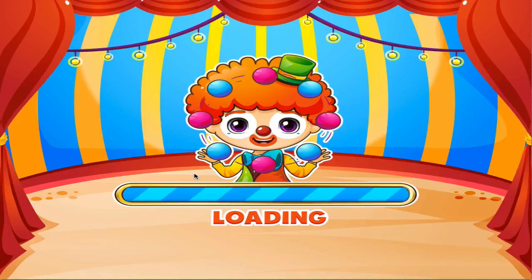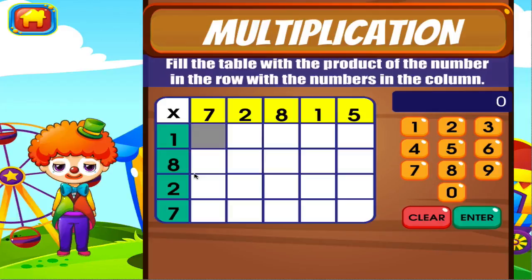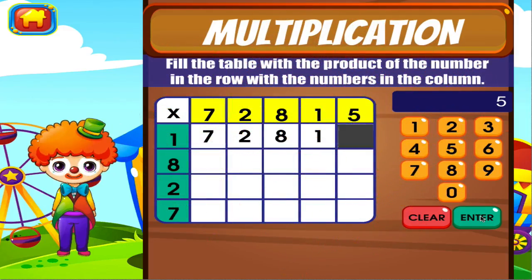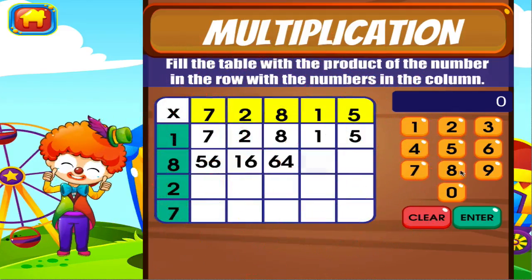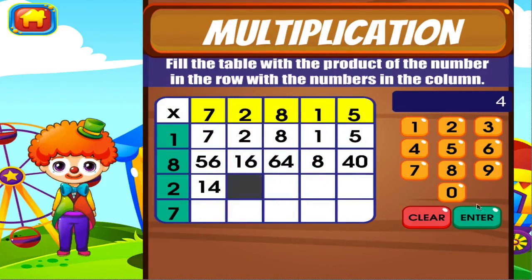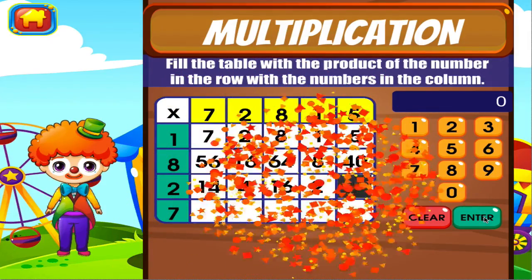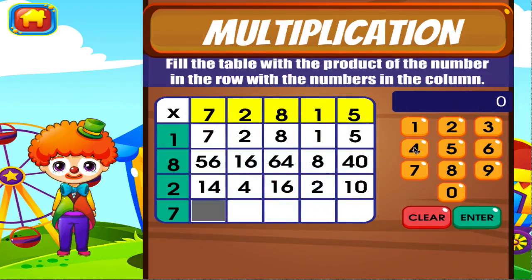Multiplication. Tap the correct answer. Tap the wrong truth. Tap the wrong truth. Tap the wrong truth. Uh-uh. Right on!